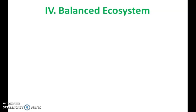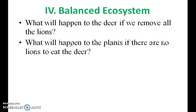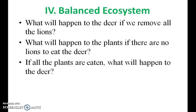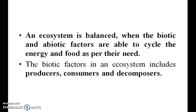Now we will see the balanced ecosystem. What will happen to the deer if we remove all the lions? What will happen to the plants if there are no lions to eat the deer? If all the plants are eaten, what will happen to the deer? It is important for the food chain to exist in any ecosystem to ensure that energy flows between the biotic and abiotic factors. An ecosystem is balanced when the biotic and abiotic factors are able to cycle the energy and food as per their need. The biotic factors in the ecosystem include producers, consumers and decomposers.